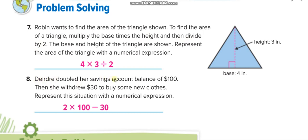Trader double her saving account balance of $100. Double means times 2. And then she withdraws $30, so minus 30, to buy some new clothes.